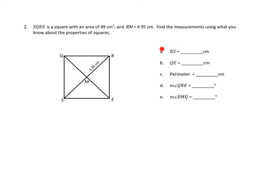They want us to find how long segment RS is — from R all the way to S. One of the things I know about squares is that the diagonals bisect each other. This diagonal bisects diagonal RS, which is the actual diagonal we're interested in. If it bisects it, that means RS is two times as long. This length is exactly the same as this length, so both halves are 4.95 centimeters. I can find RS by multiplying 4.95 times 2.